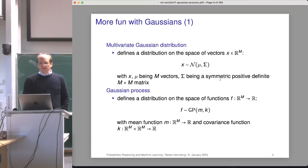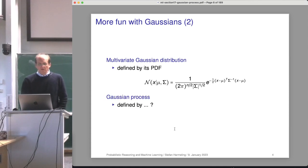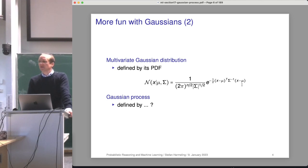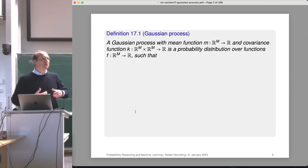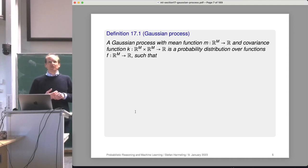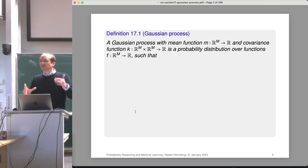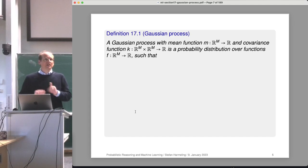Going back to the slide: we are familiar with the multivariate Gaussian distribution and now generalize it to the space of functions. The multivariate Gaussian distribution is defined by a PDF, which describes how likely it is to see a certain vector. For Gaussian processes, we use a construction common in mathematics — similar to how we defined positive definiteness. A positive definite function is one where, if you take finitely many data points and plug them in, the resulting matrix is positive definite.